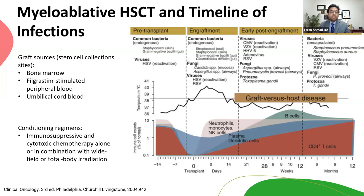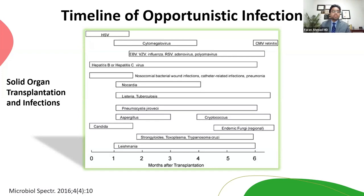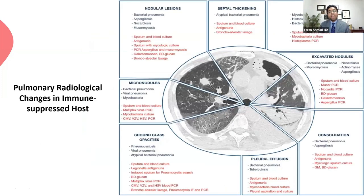If we miss atypical pathogens and don't treat them, the patient will get more sick regardless of how many antibiotics you give. Similarly with solid organ transplant, the timeline matters: if the patient gets sick within one month of transplant, you're looking at nosocomial bacterial infection. Three to four months later, you start thinking about endemic fungal infections, toxoplasmosis, cryptococcosis, pneumocystis, and possibly tuberculosis.